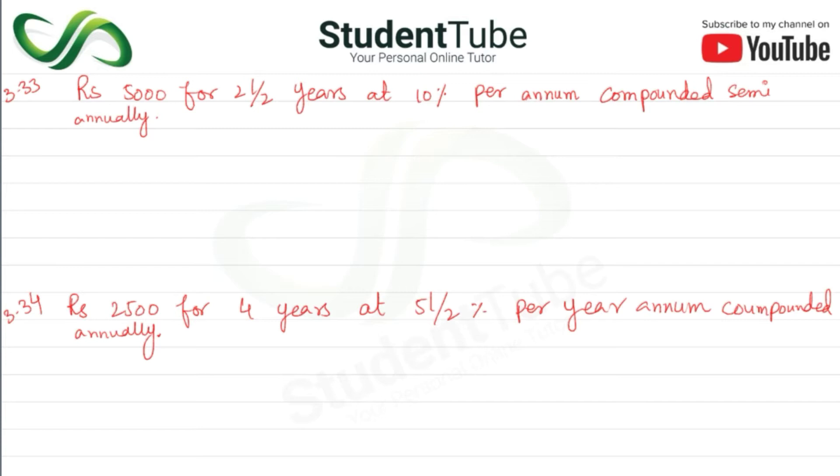Same formula: A is equal to P times (1 plus i upon m) raised to the power m multiplied by t.